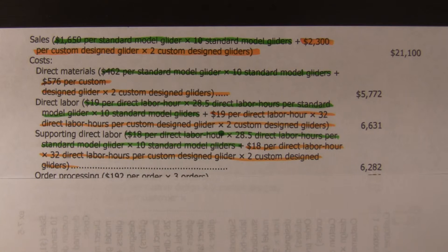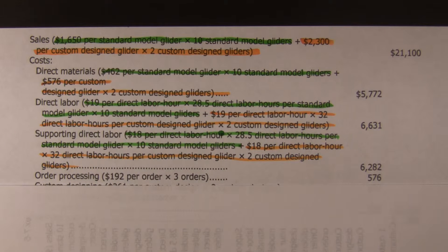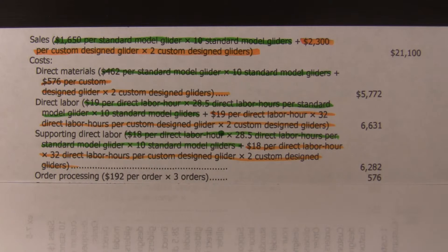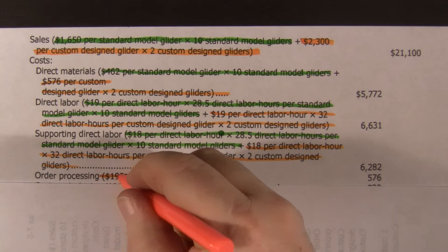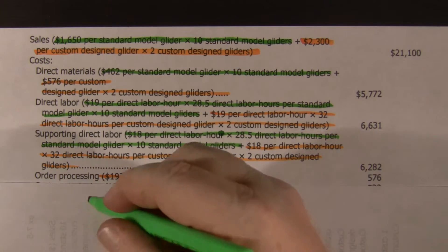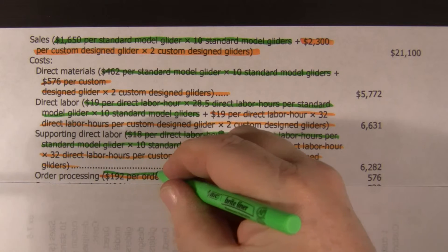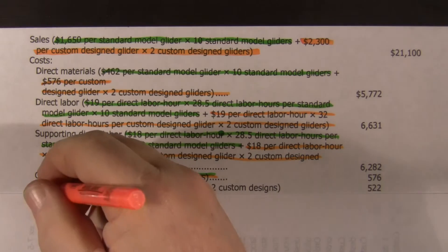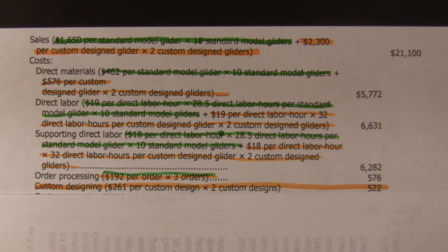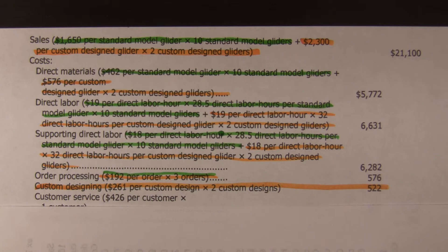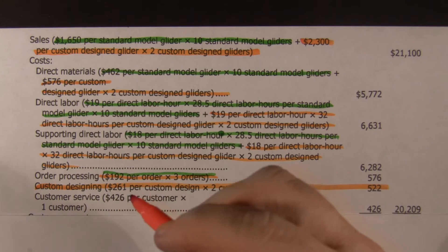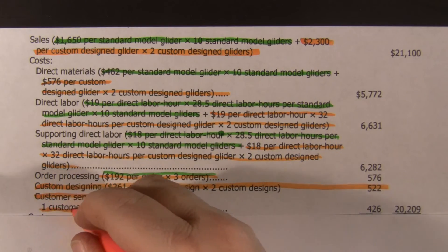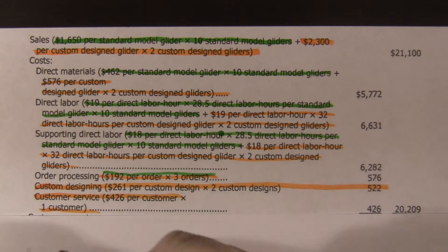They tell us that they had a total of three orders, and they're not related to either product, but our activity-based analysis tells us that it costs us $192 per order, and that's for the models irrespective of cost, so we'll give that two colors. Custom designing is just for the custom designs, so that would be one of our orange numbers — no custom design for the standard model. And there's customer service, which is per customer, not per model, so we'll give that two colors.